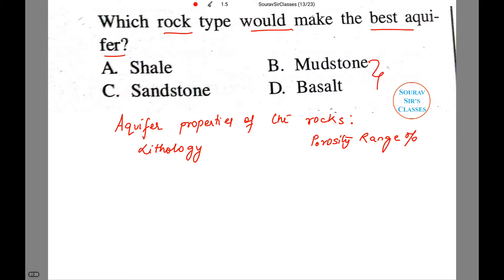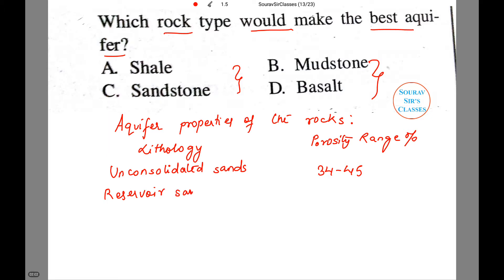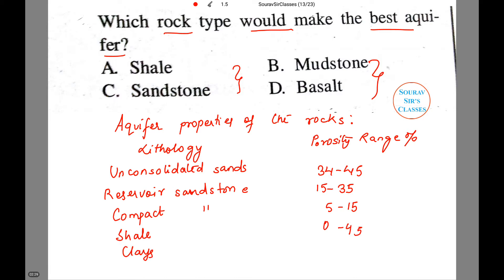We will comment on these four types and many others as well. First is unconsolidated sands: 35 to 45 percent. Then reservoir sandstone: 15 to 35 percent. Next, compact sandstone: 5 to 15 percent. Then one of the given options — basalt — is 0 to 45 percent, and clays are also 0 to 45 percent.